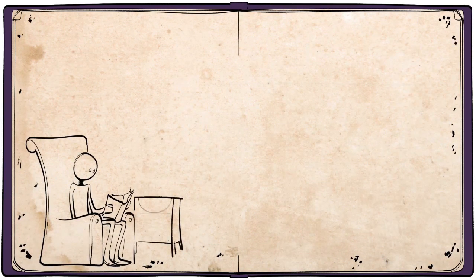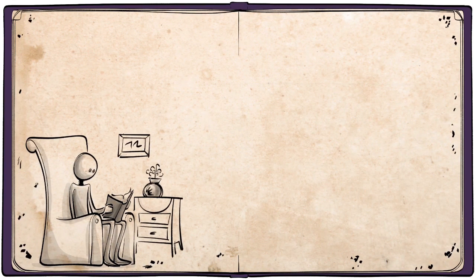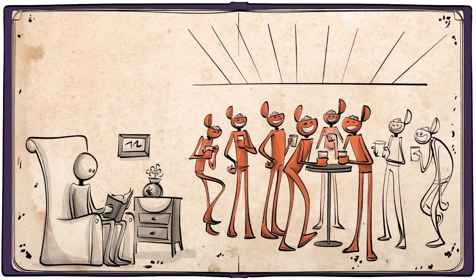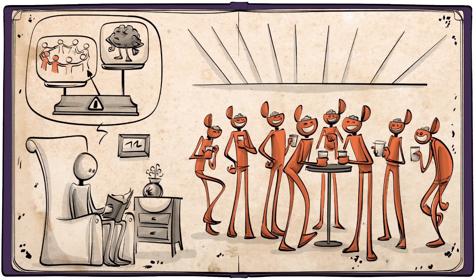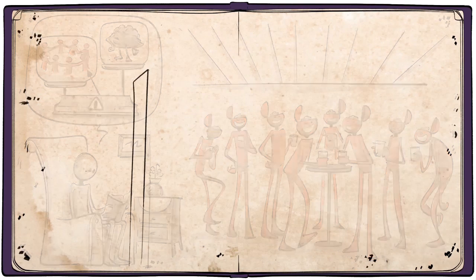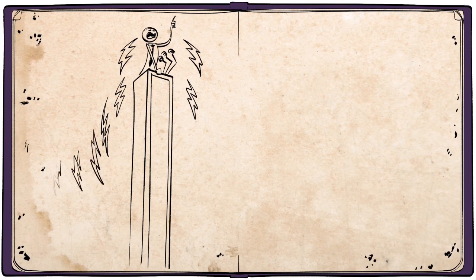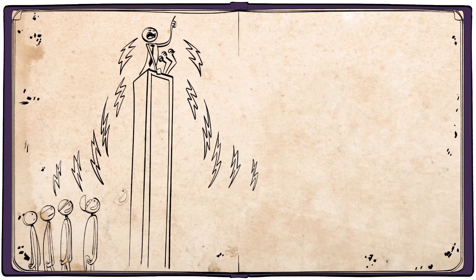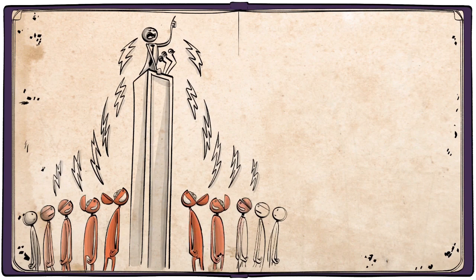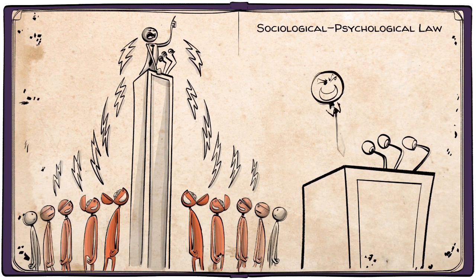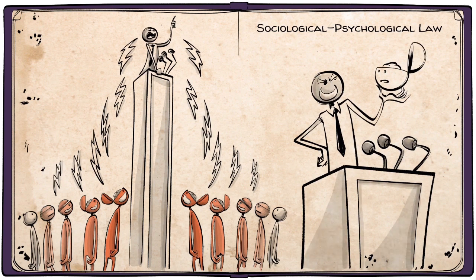People who live in solitude manifest this defect less frequently than individuals in groups, and so it would seem that stupidity is perhaps less a psychological than a sociological problem. It becomes apparent that every strong upsurge of power, be it of a political or religious nature, infects a large part of humankind with stupidity, almost as if this is a sociological-psychological law where the power of the one needs the stupidity of the other.